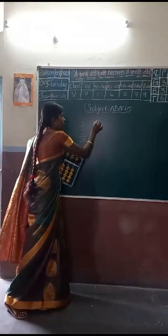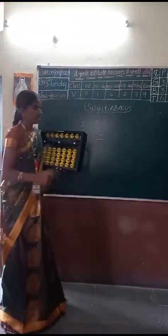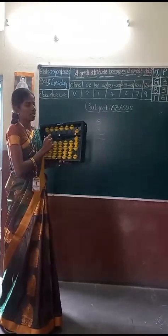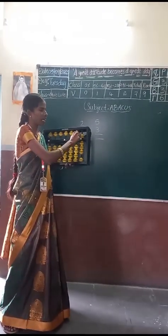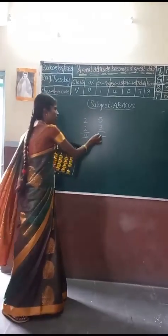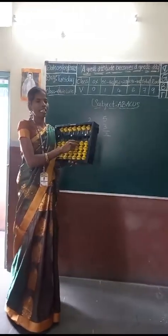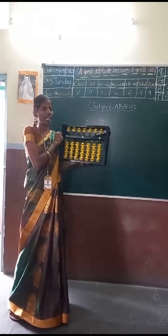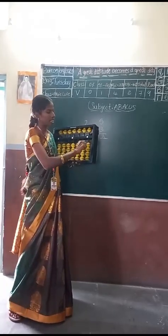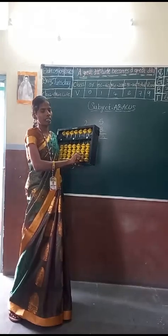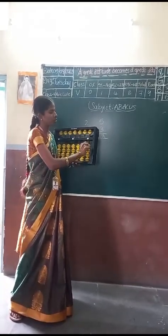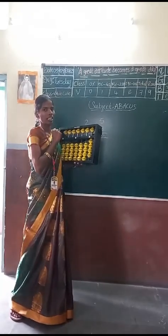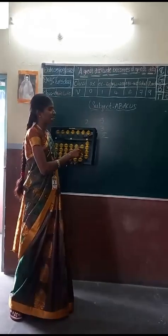We are taking 5 plus 3. Where is the 5? Upper bead — 5, 6, 1, 2, 3. By counting, we are keeping the beads: 5, 6, 7, 8. The answer is 8. Whenever we are moving the beads, we have to use some fingers. We are holding the tool in the left hand and moving the beads with the right hand. For addition, we are using only the thumb finger for lower beads, not for upper beads. 2 plus 2: 1, 2 — I am using only the thumb finger.